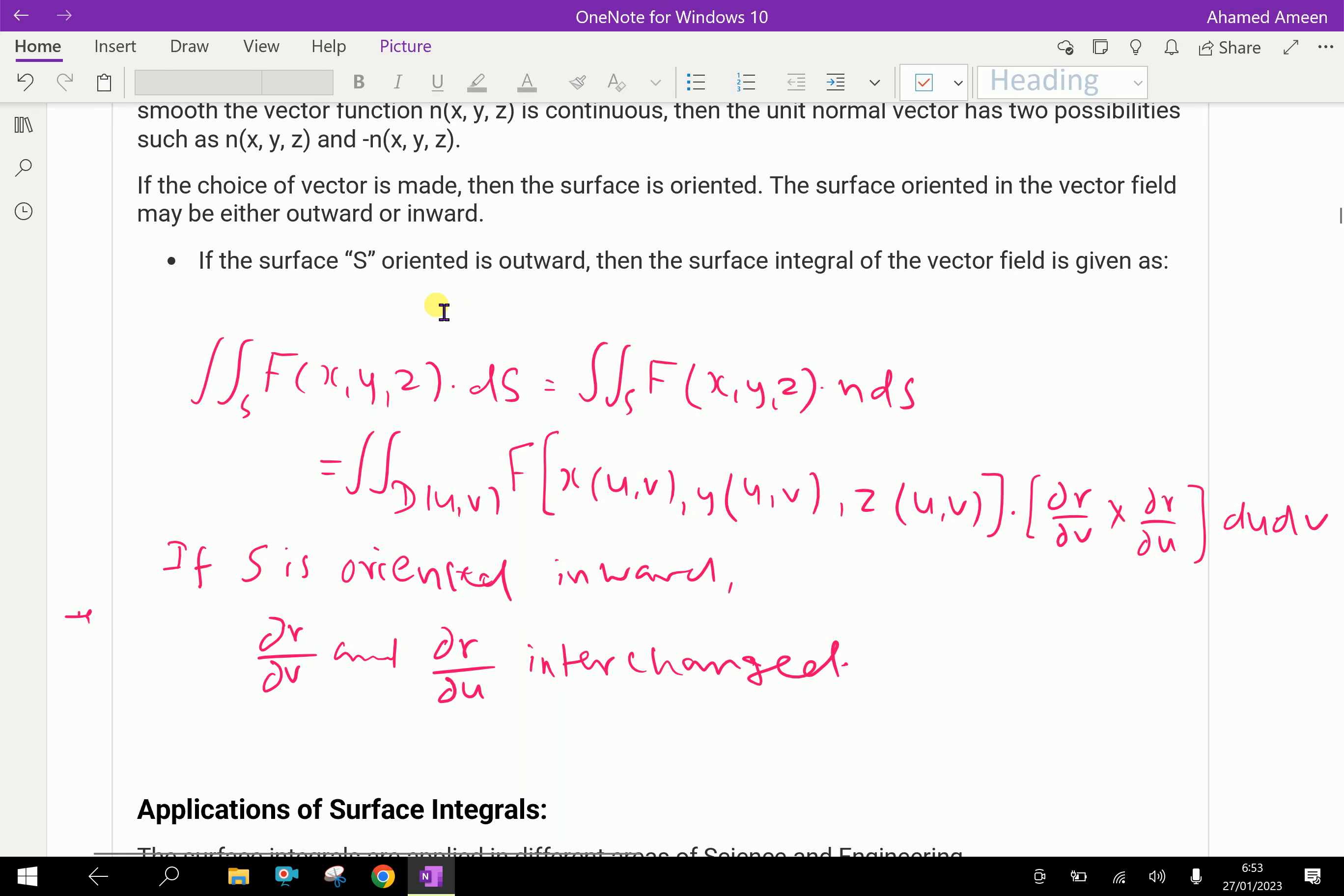If the surface is outward, then the surface integral of the vector field is given as double integral over S of F(x, y, z) · ds equals double integral over S of F(x, y, z) · n ds. This equals double integral over D of u, v of F(x(u, v), y(u, v), z(u, v)) · (dr/du cross dr/dv) du dv.